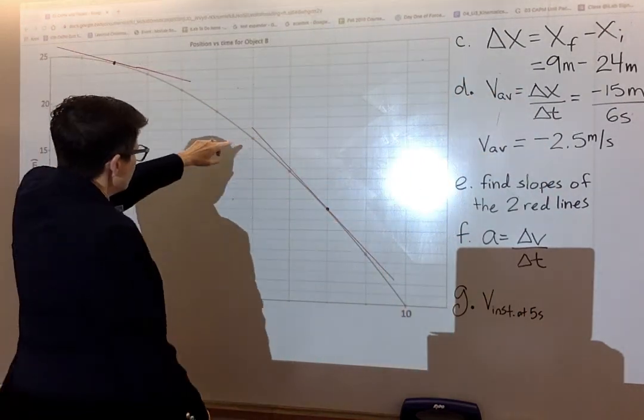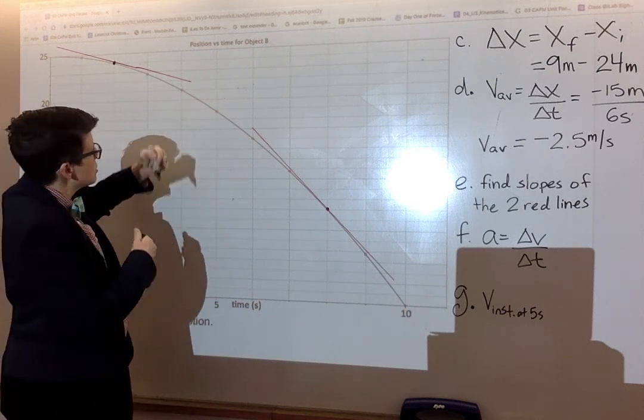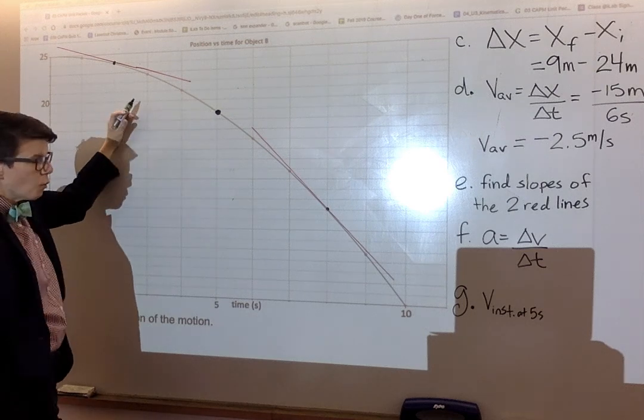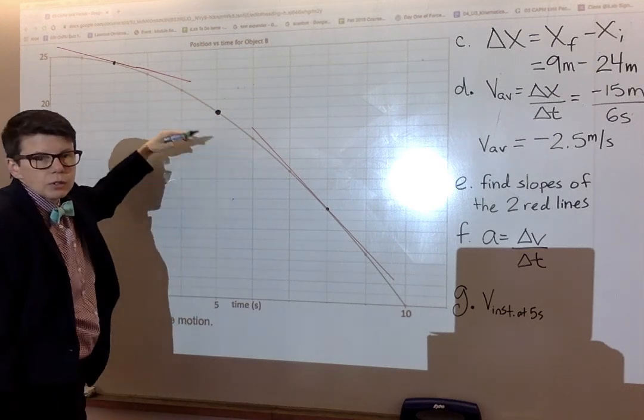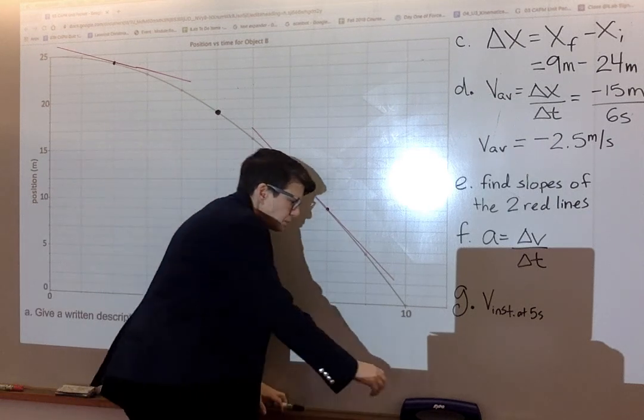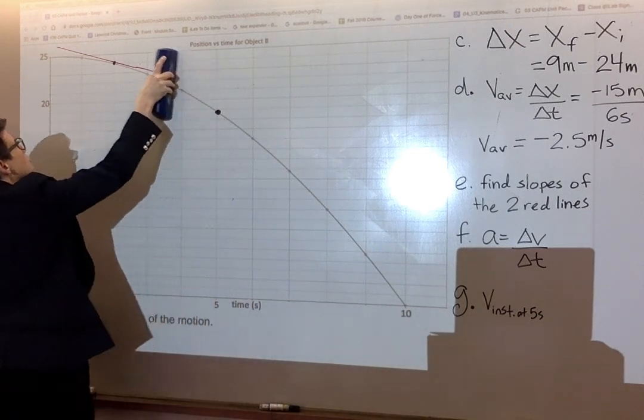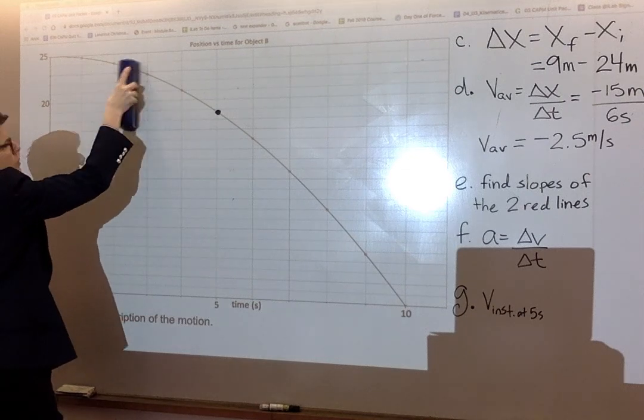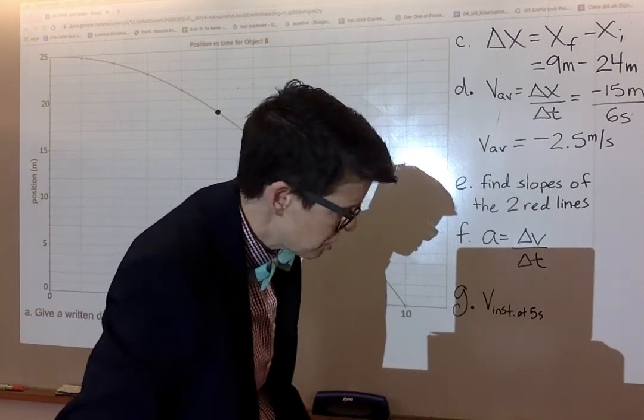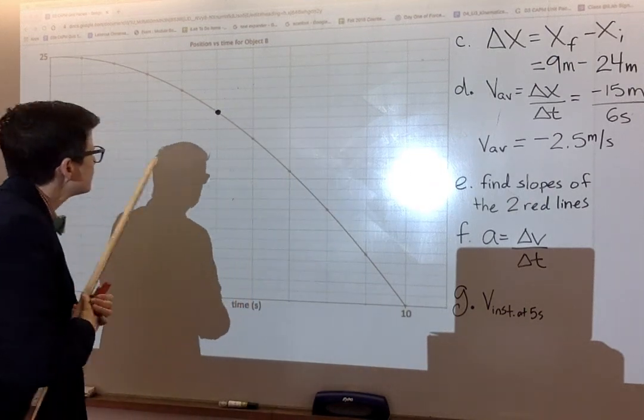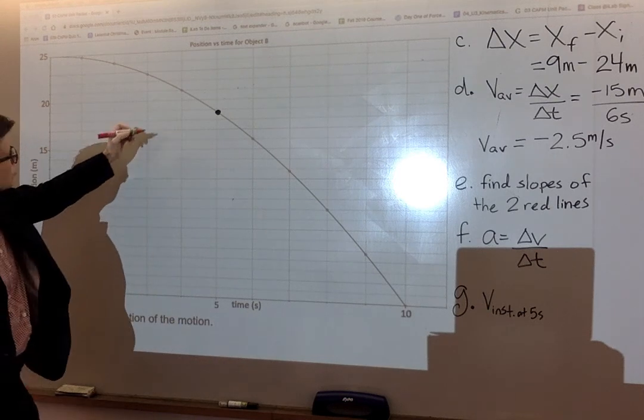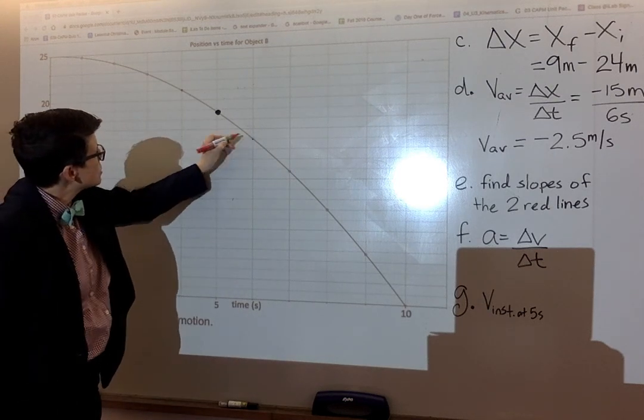So five seconds is at the center between four and six, three and seven, et cetera. So I'm going to erase this from the previous question. And I'm going to say with my ruler, connect the line. I'll go ahead and do four to six seconds. Four to six.